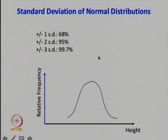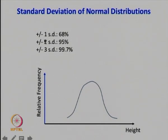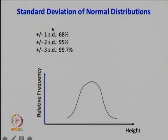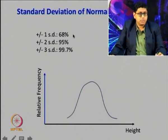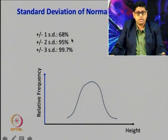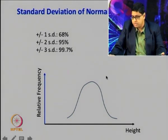In contrast, for a mound-like or Gaussian normal distribution, 68 percent of the data is expected to lie within plus or minus 1 standard deviation. As opposed to 75 percent predicted by Chebyshev's theorem, in a normal distribution 68 percent stay within plus or minus 1 standard deviation, 95 percent within plus or minus 2, and 99.7 percent within plus or minus 3 standard deviations.